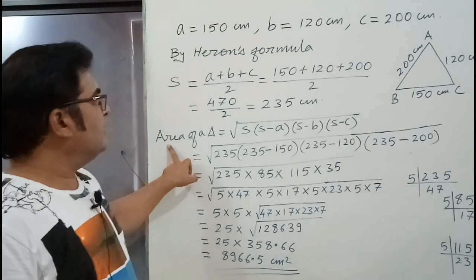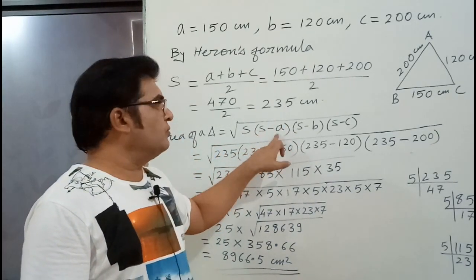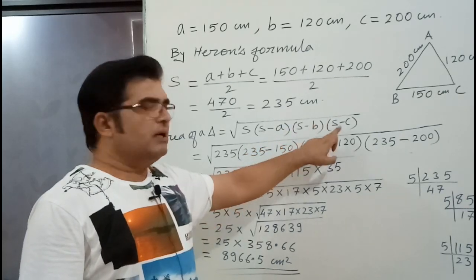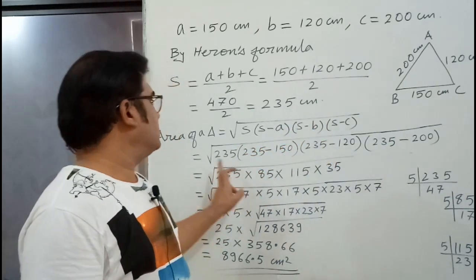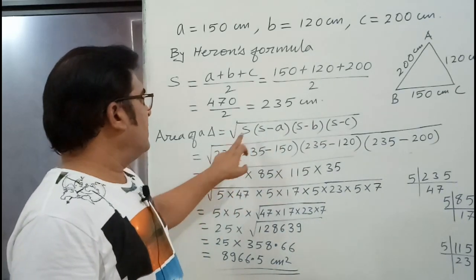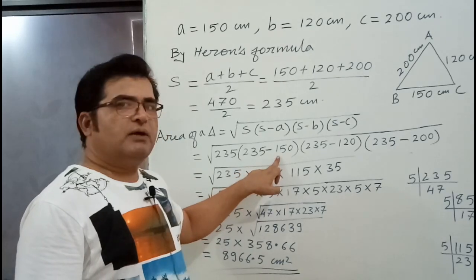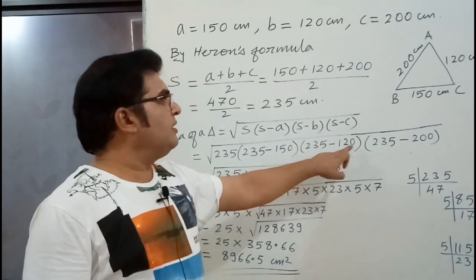Then we apply the area of a triangle equal to under root of S into S minus A into S minus B into S minus C. Then we have to put the value. Square root of value of S is 235 into 235 minus 150, 235 minus 120, 235 minus 200.